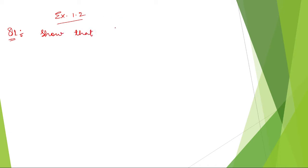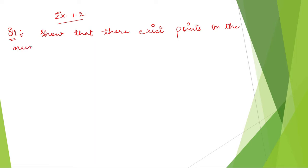The question asks: do there exist points on the number line not representing a rational number?